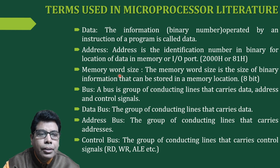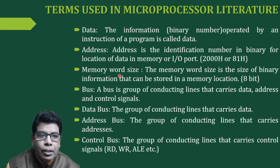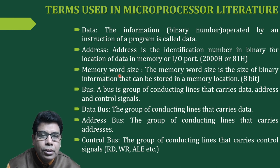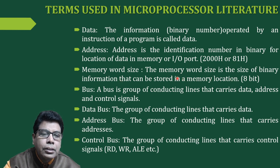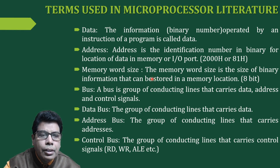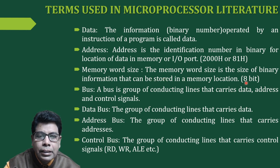The next term is memory word size. Memory is organized in the form of words. The word size of memory is the size of binary information that can be stored in a memory location. Generally, this will be 8 bits. That's why when we say we have 10 GB, 8 GB, 16 GB, or 32 GB of memory, this memory is in bytes — so the word size here is 8 bits.